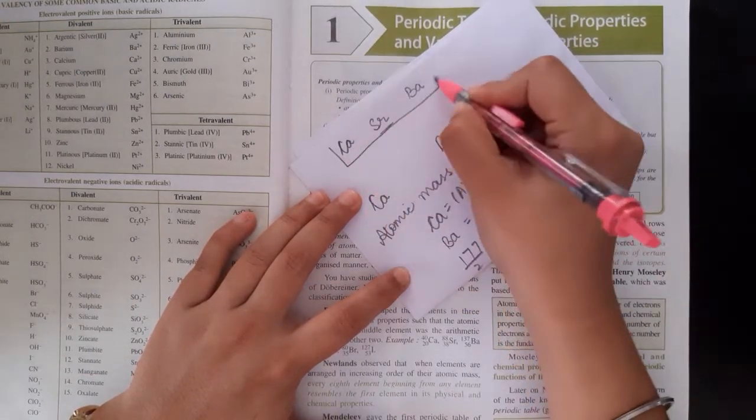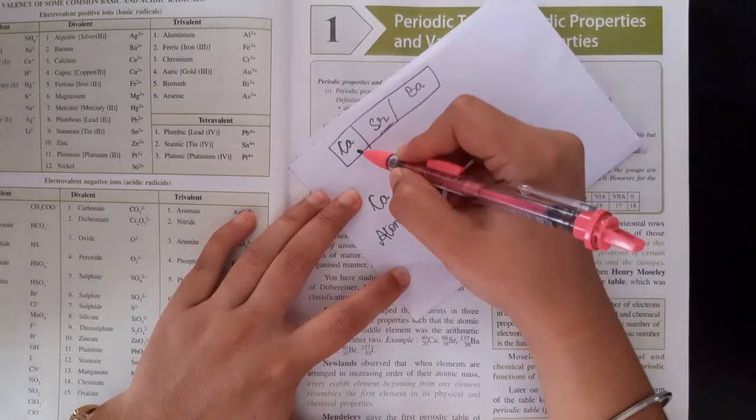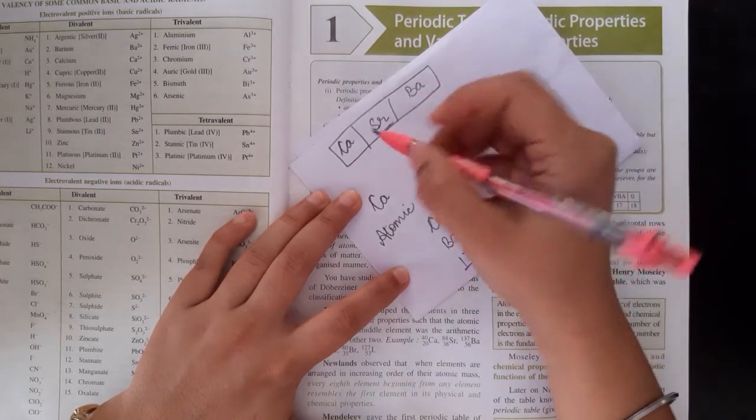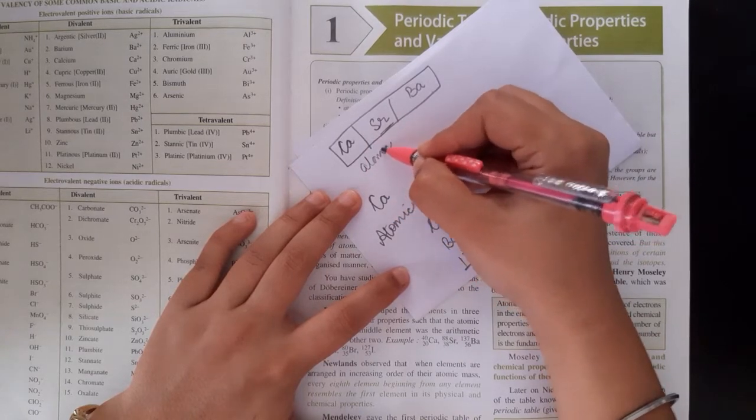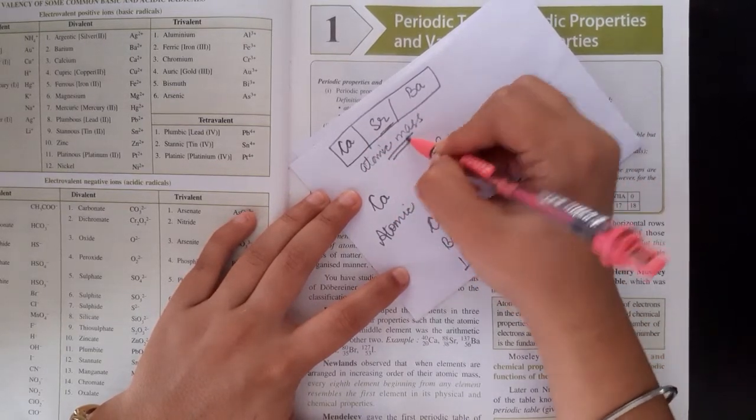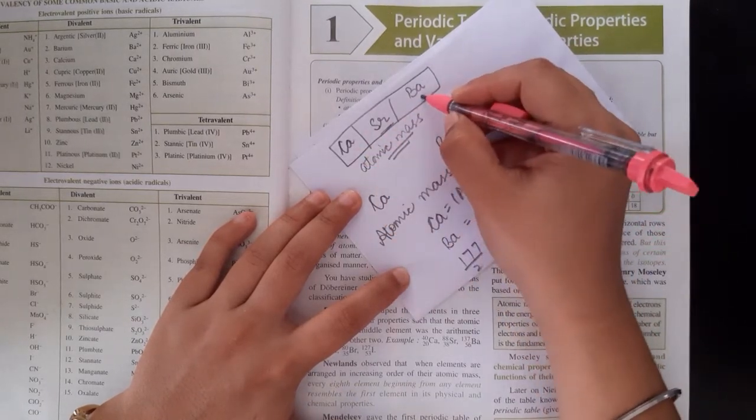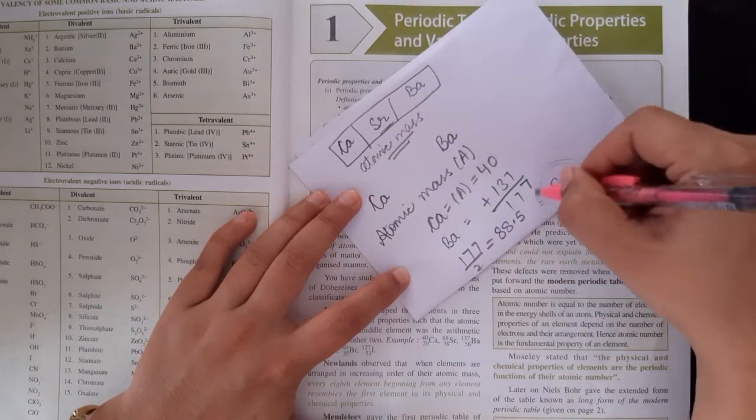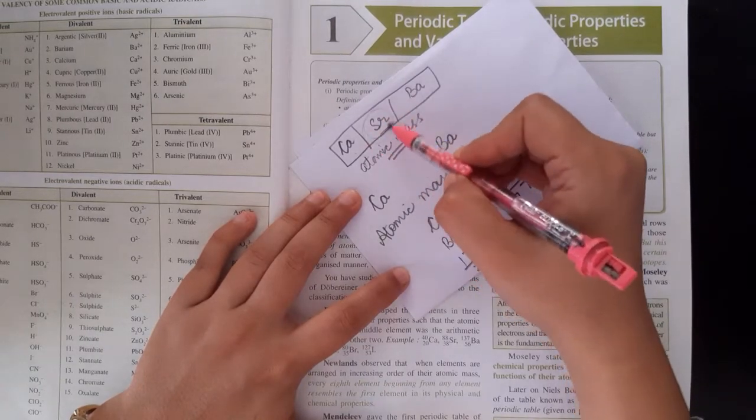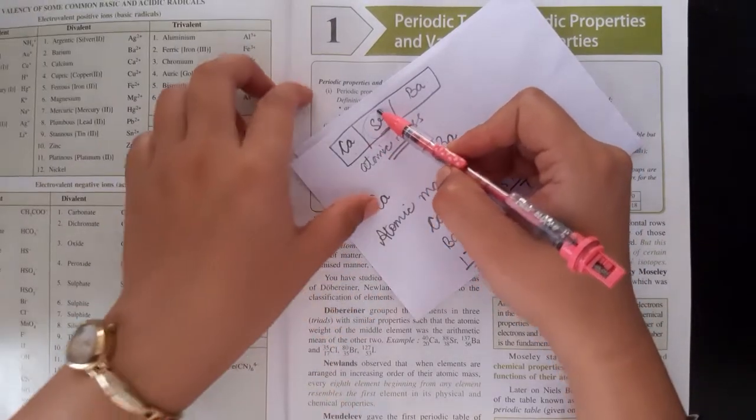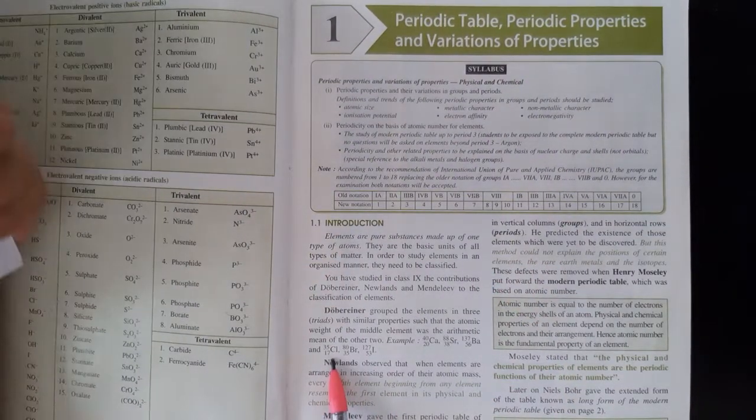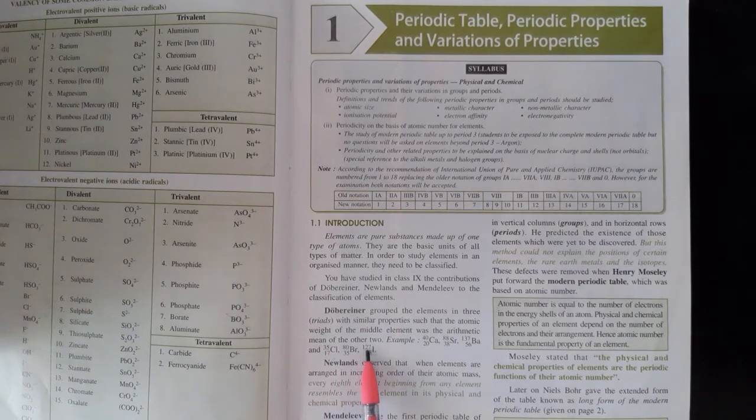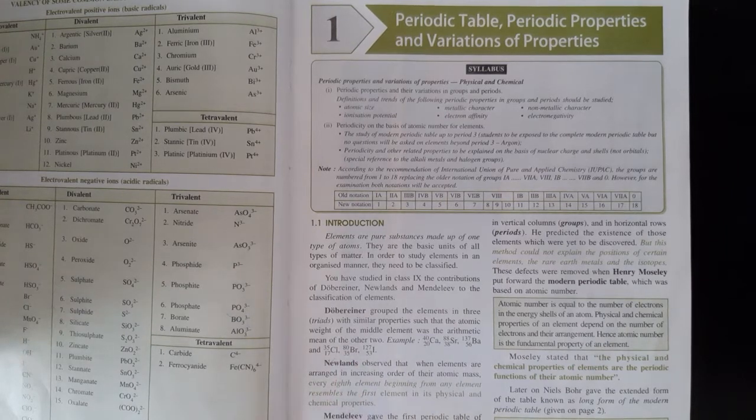In this way, this is the triad. He took three elements with the same property. Same property which property? Means atomic mass. First and third, and the answer is the middle one. Same method he applied on this. Calcium, Bromine, Iodine. Calcium 35 plus 127 divided by 2 equals 80.